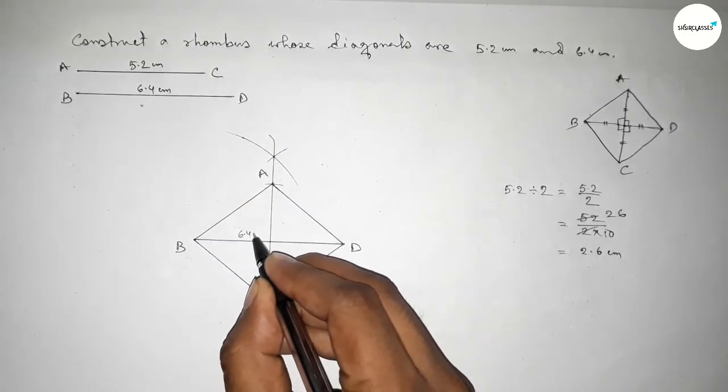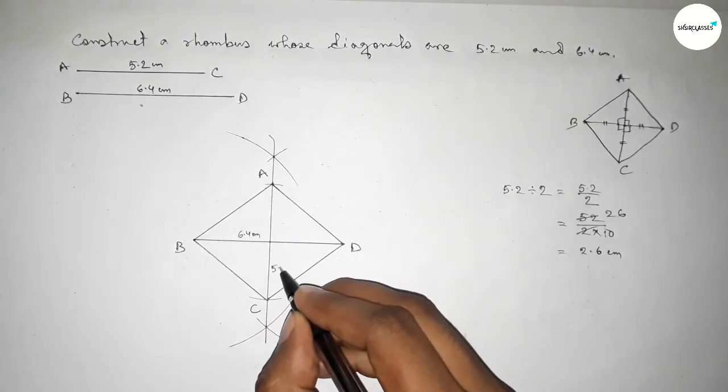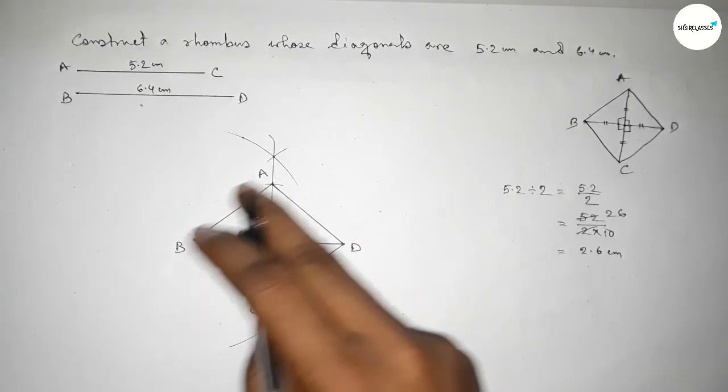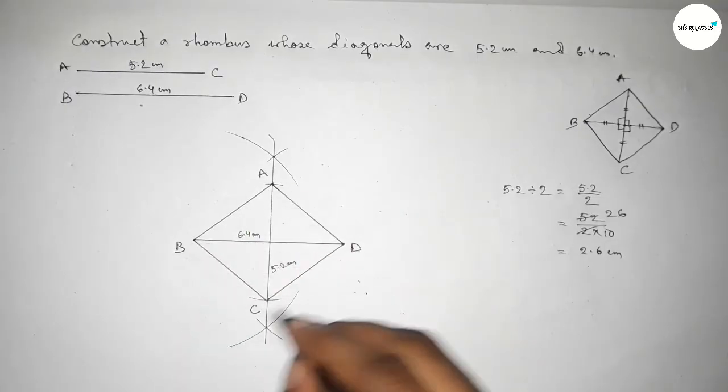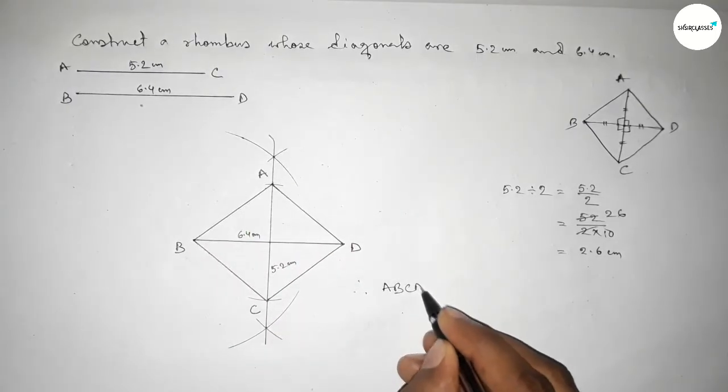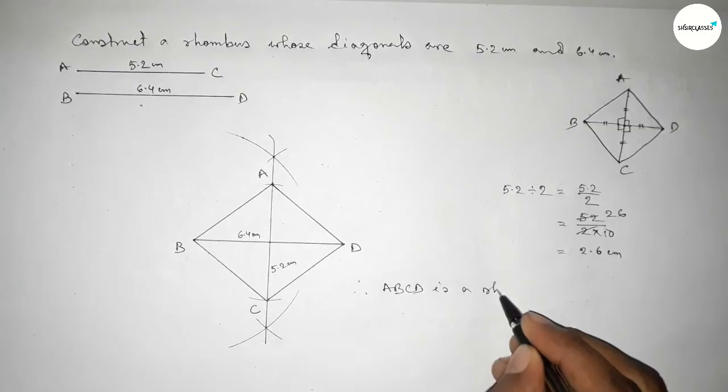So this diagonal is 6.4 centimeters and this diagonal is 5.2 centimeters. Therefore, ABCD is a rhombus with given two diagonals 5.2 centimeters and 6.4 centimeters.